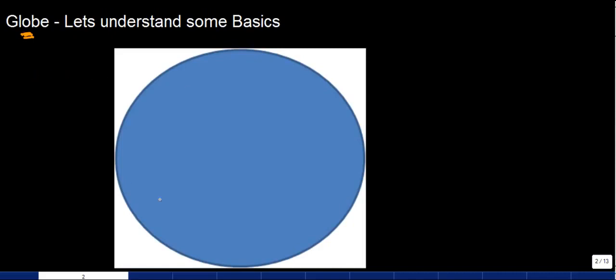Now I know this is a circle, and if we talk about earth, it's actually not exactly a circle or a sphere because it's a little bit flattened towards these two sides. It's not exactly spherical but flattened on either of these two ends, and I'll come a little later in terms of what exactly these two ends are.